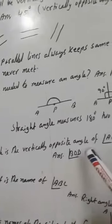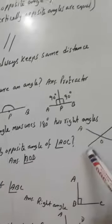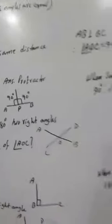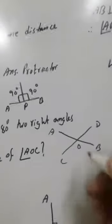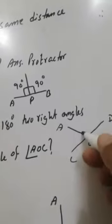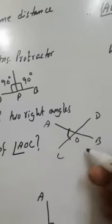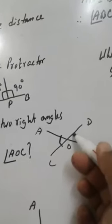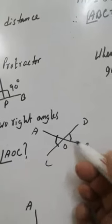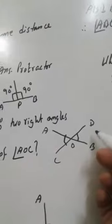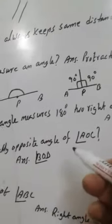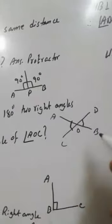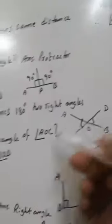Which is the vertically opposite angle of angle AOC? The vertically opposite angle of angle AOC is angle BOD. So the vertically opposite angle of AOC will be BOD.